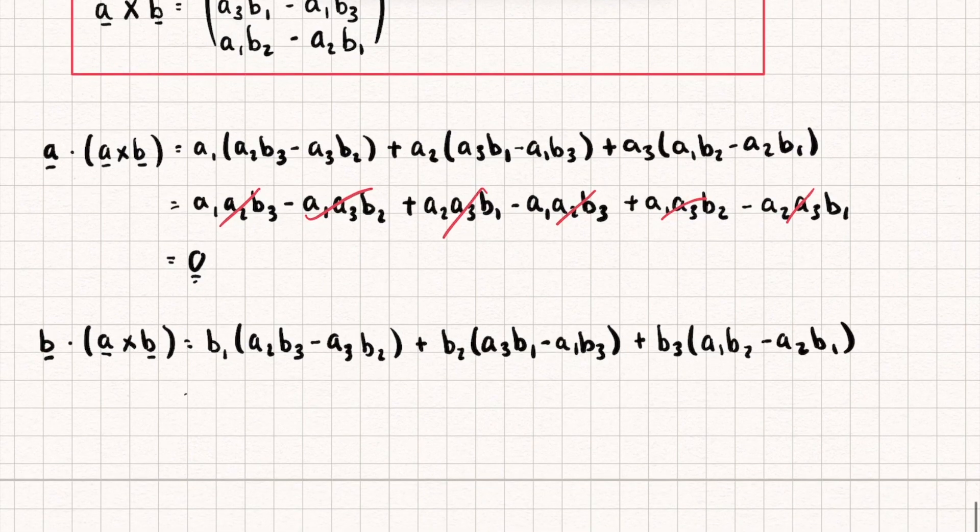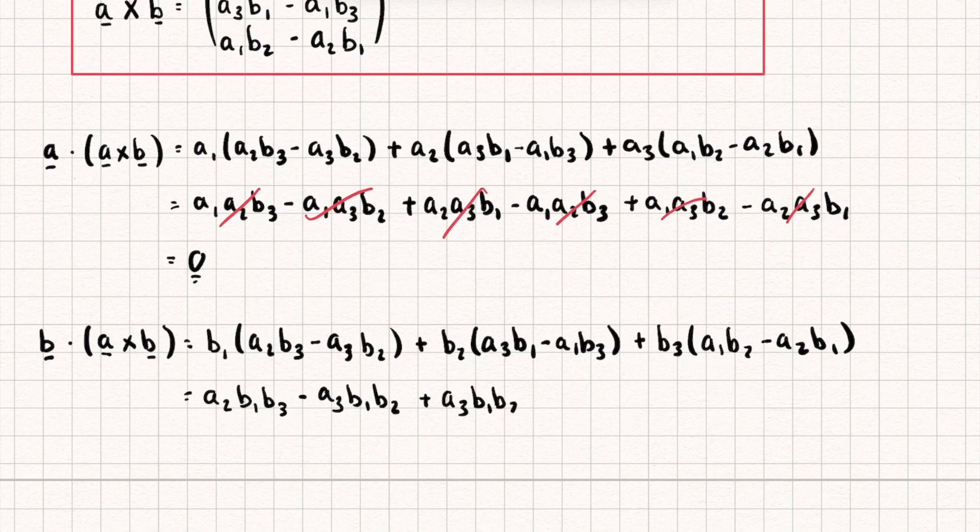Okay, let's expand this. So we're going to get a2b1b3. Again, I'm writing these in order just to make it easier to spot terms that are going to cancel out. Minus a3b1b2 plus a3b1b2 minus a1b2b3 plus a1b2b3 minus a2b1b3.